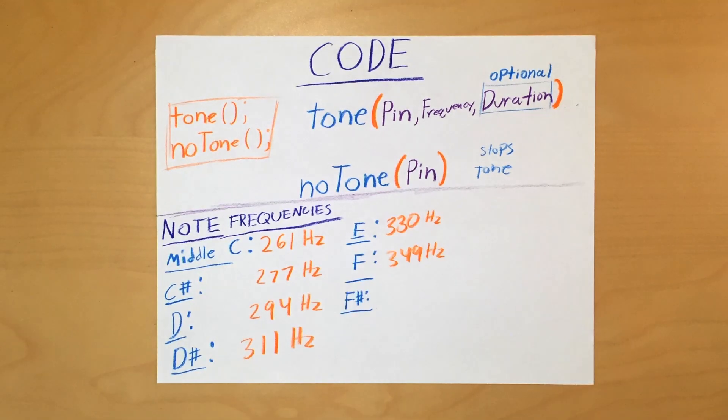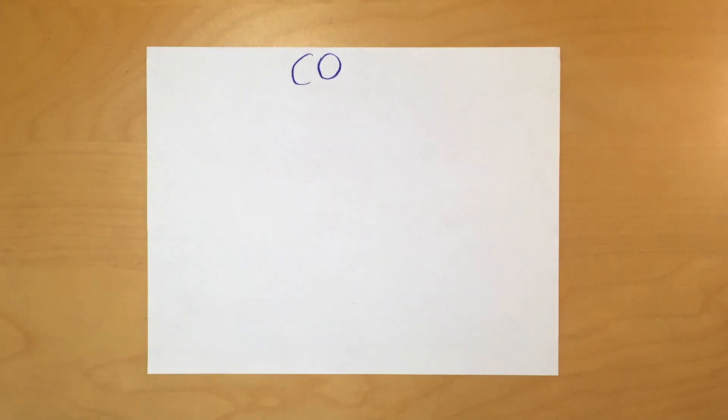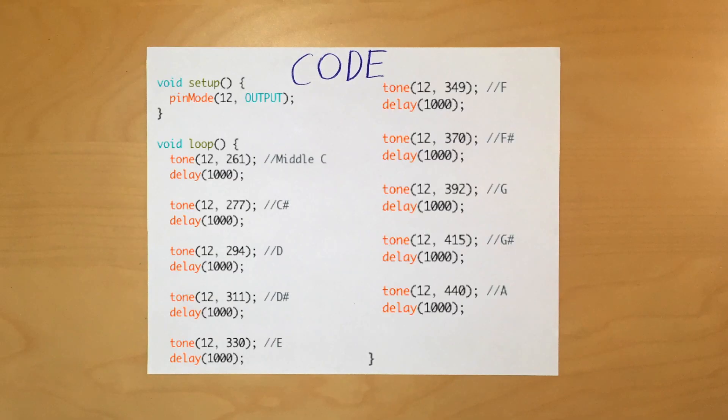Here are the frequencies of some common notes. You can plug these into the frequency spot in the tone command. Now let's make a program that plays a musical scale using these new commands.